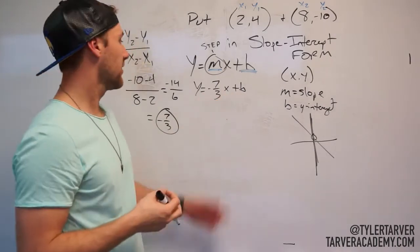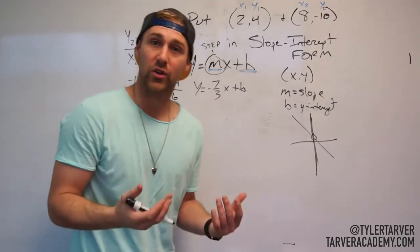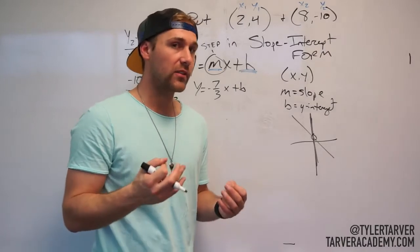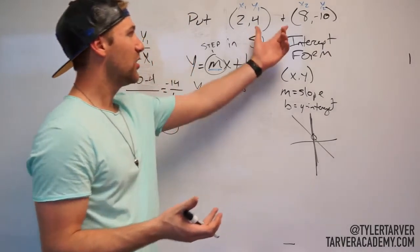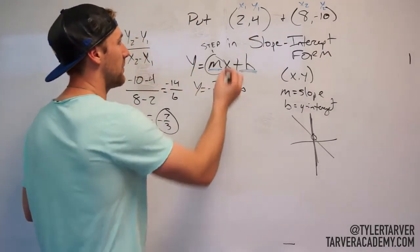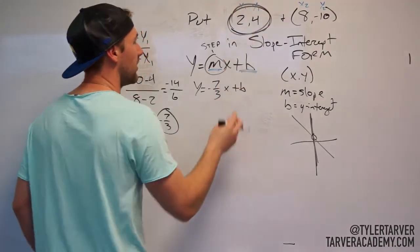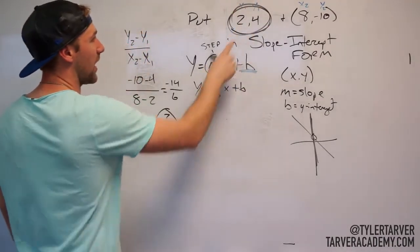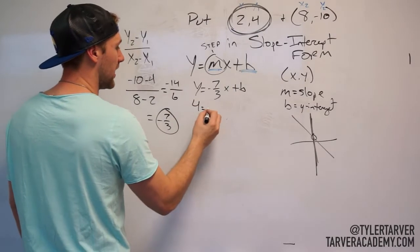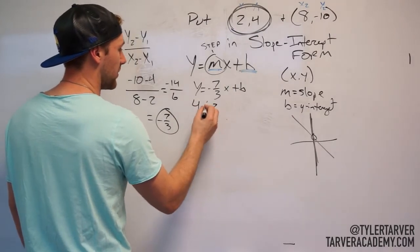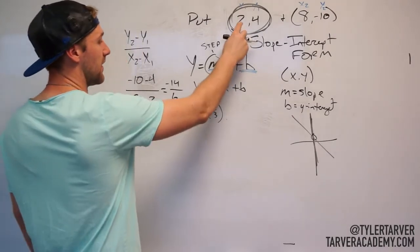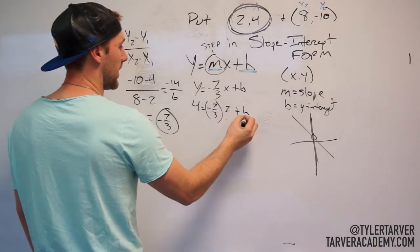You're thinking, how can you find it, Tyler, if I don't have x and y? You do. Any coordinate on this line can be your x and y. You happen to have two of those coordinates. I'm going to use this one because these numbers look easier. So I'm going to use my y, which is 4, equals negative 7 over 3. I'm going to put that in parentheses because it's hard to see. And then our x is 2 plus b, okay?